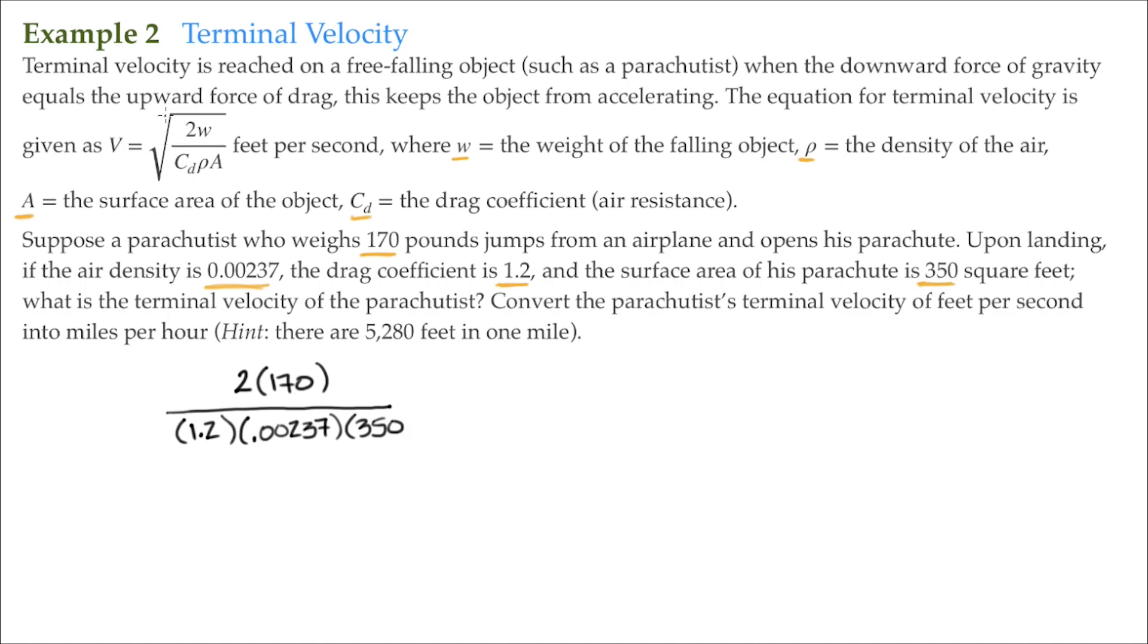And then finally, we take the square root of the entire thing. And that's our velocity, V, our terminal velocity. Now there's a couple of things going on here. We have two sets of grouping symbols. We have this radical sign, the square root symbol, and we have this division bar.